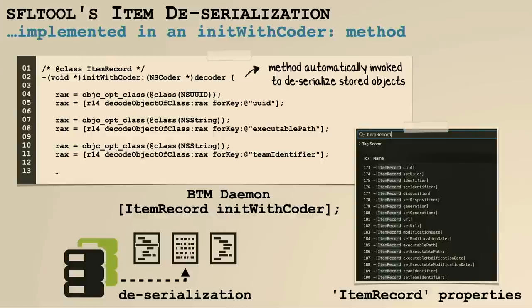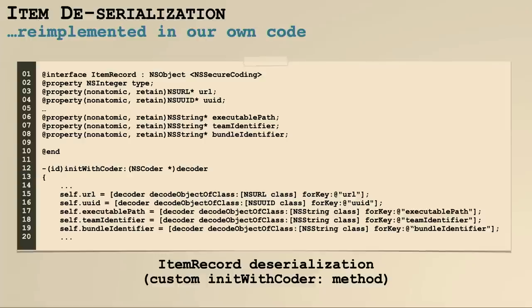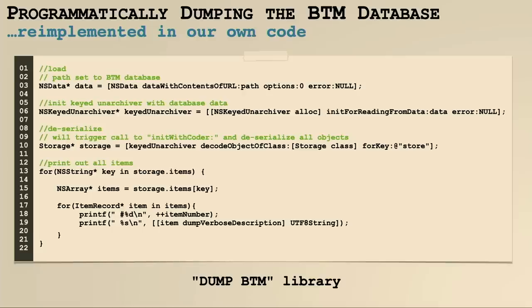SFL tool can somehow de-serialize those objects and display them. So if we reverse engineer SFL tool further and figure out how those objects are de-serialized, we should be able to write our own de-serializer, read the database directly, and display this information. Looking at SFL tool, we find its de-serialization code describing the objects in this database — things like executable path and bundle identifier. We can essentially re-implement that de-serialization ourselves, then write code that opens the database, loads it into our own keyed archiver, and invokes the decode-object-of-class method, which invokes our custom de-serializer.